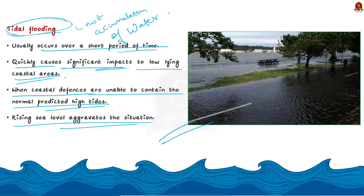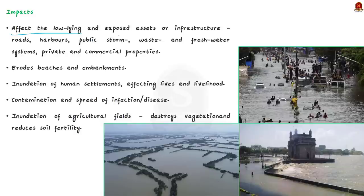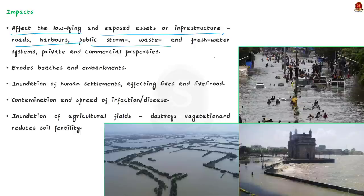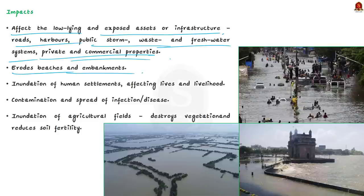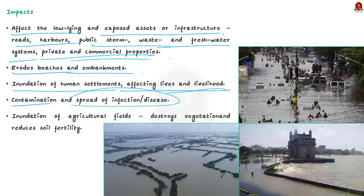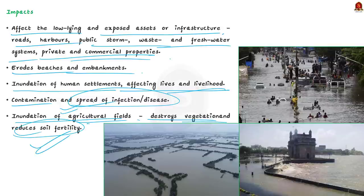What are its impacts? They affect low-lying and exposed assets or infrastructure: roads, harbors, public storm water systems, wastewater systems, and freshwater systems. Private and commercial properties are also affected. It erodes beaches and embankments, results in inundation of human settlements affecting lives and livelihood. It affects health by contamination and spreading of infection or disease. It also inundates agricultural fields, damages crops, destroys vegetation, and reduces soil fertility.